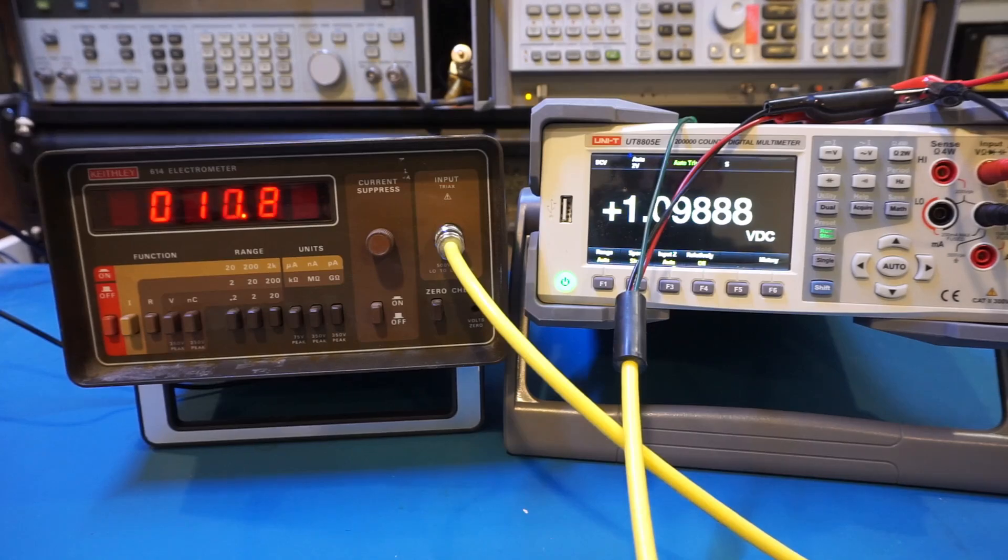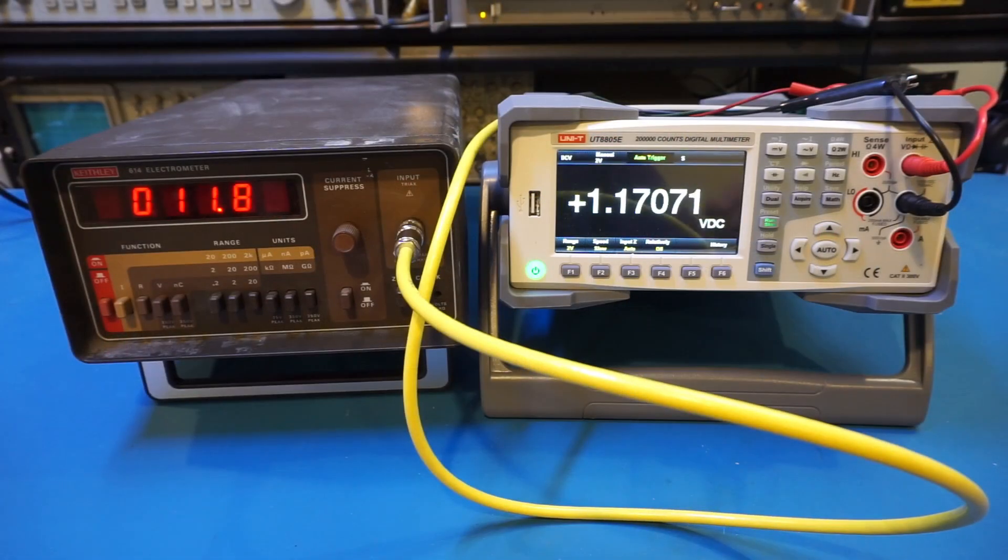And once again we're stabilizing at around 11 gigaohms. And that's pretty much what I want to demonstrate today. Now you know the true input impedance of the UT8805E. I hope you enjoyed this short video. If you liked the video please remember to give it a big thumbs up and remember to subscribe to the channel for more videos like this in the future. Your participation makes videos like this possible. Thanks for watching and I will see you next time.